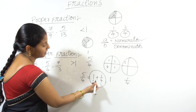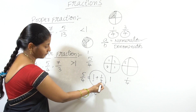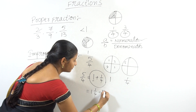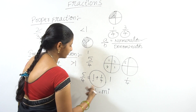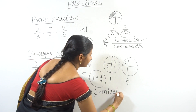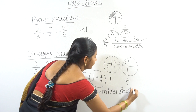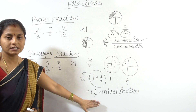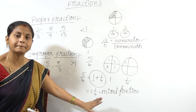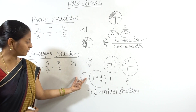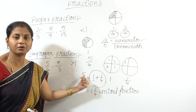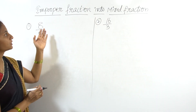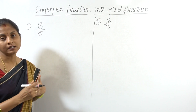The improper fraction can also be written as the combination of a whole number and a proper fraction — this is called a mixed fraction. Mixer means whole number and fraction are mixed together. An improper fraction can be expressed as a mixed fraction.